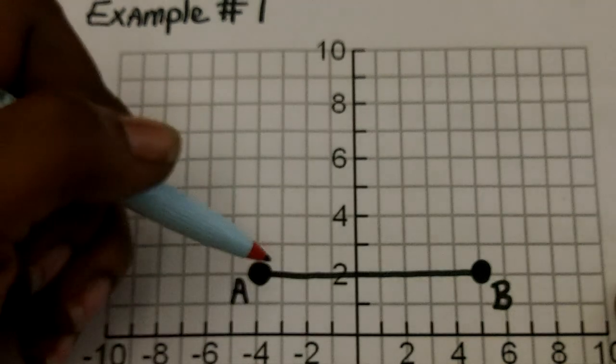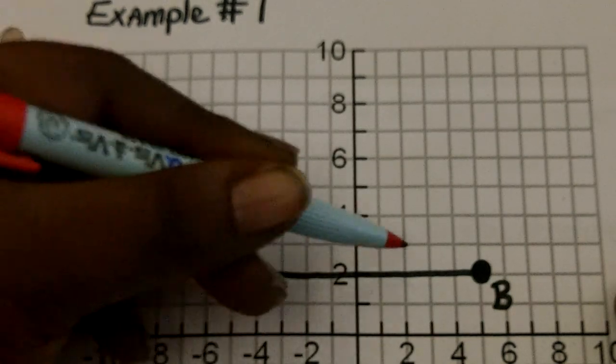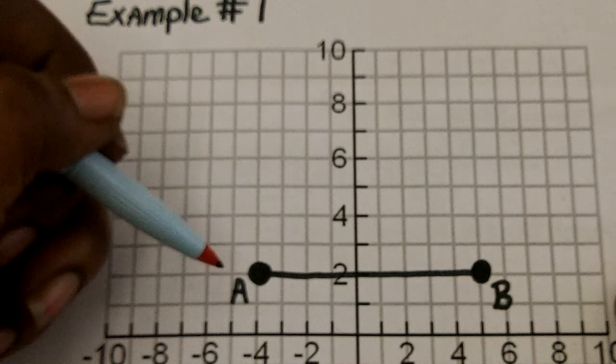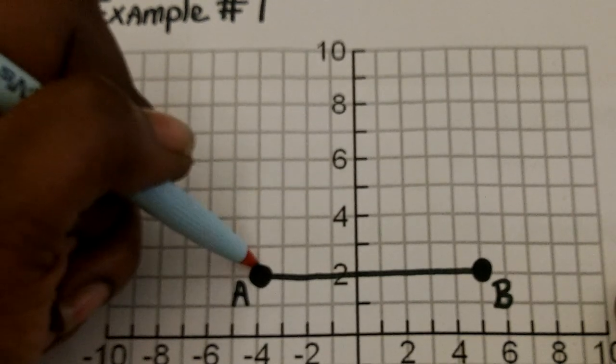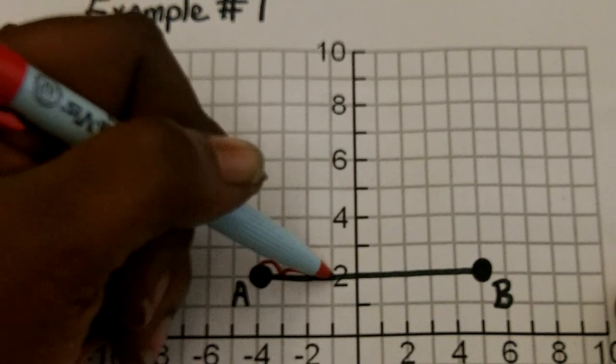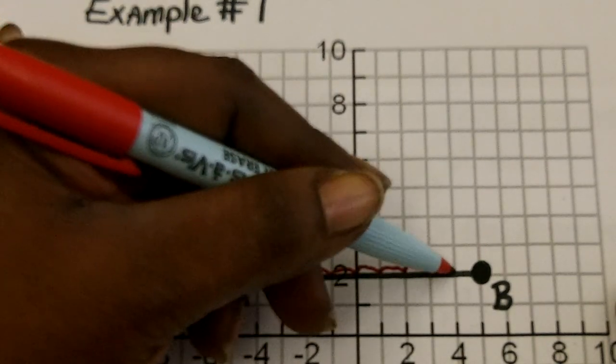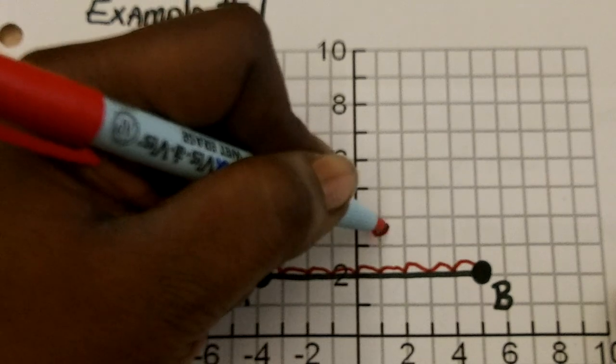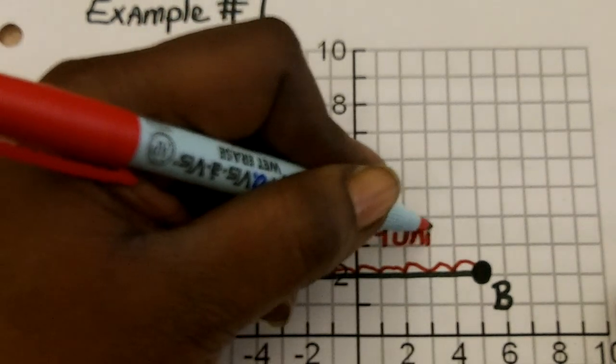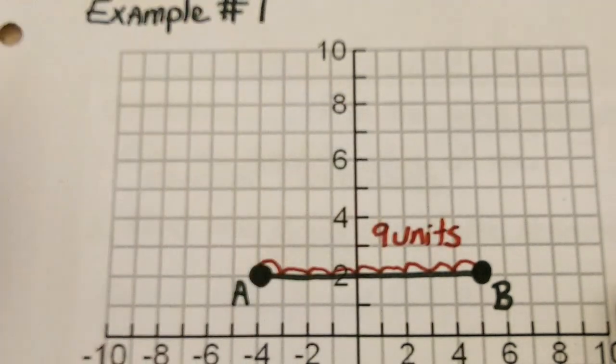All you would simply do is count the spaces between one point to the other. So in this example, line AB appears to be 1, 2, 3, 4, 5, 6, 7, 8, 9 units long. So we would write 9 units for its length.